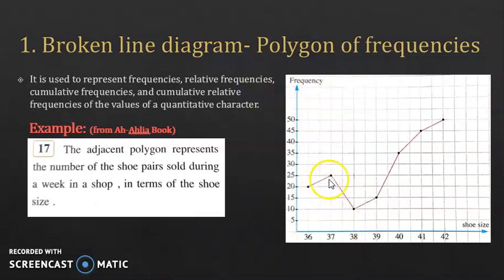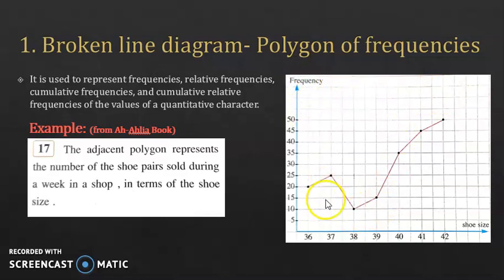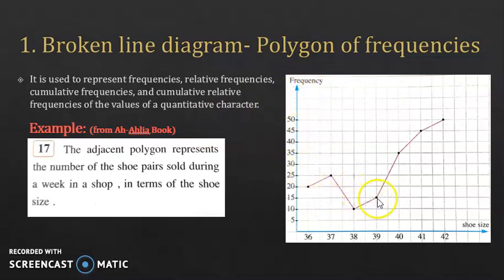This one is called the polygon of frequency because the y-axis corresponds to the frequency. If the y-axis corresponded to the relative frequency, for example, this would be called the polygon of relative frequency.